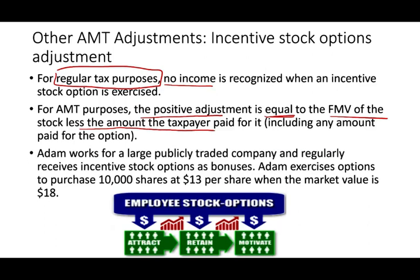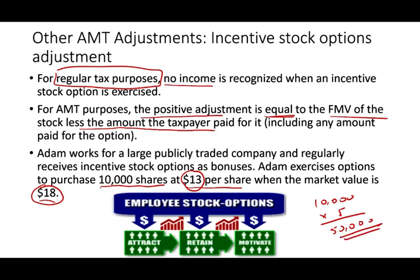Adam works for a large publicly traded company and received incentive stock options as bonuses. Adam exercises options to purchase 10,000 shares at $13 per share when the fair market value is $18. So Adam had 10,000 shares available and he can buy each at $13, but the price today is $18. So immediately, if Adam wants to, he can turn around and sell his shares for $18, making $5 profit per share — he can immediately make $50,000 if he decides to sell them.